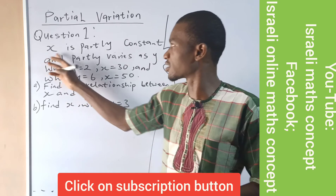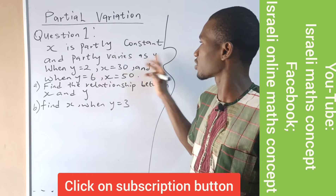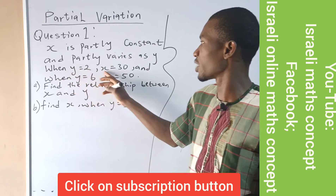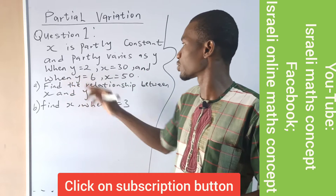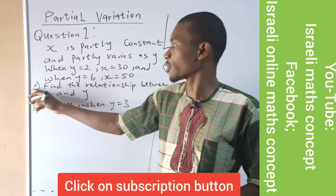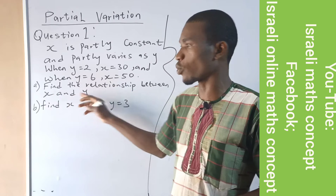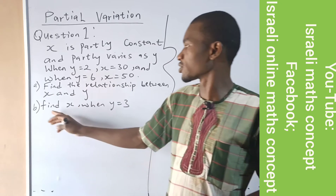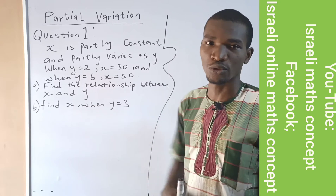The question says that x is partly constant and partly varies as y. When y is equal to 2, x is equal to 30. And when y is equal to 6, x is equal to 50. The first question says find a relationship between x and y. The second question says find x when y is equal to 3.